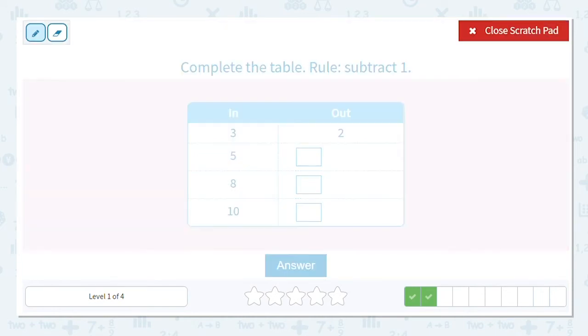Next one. This time we're subtracting 1, we're taking away 1. So is 3 minus 1, 2? Yes. What is 5 minus 1? 4. What's 8 minus 1? 7. And what's 10 minus 1? 9. So 2, 4, 7, 9.